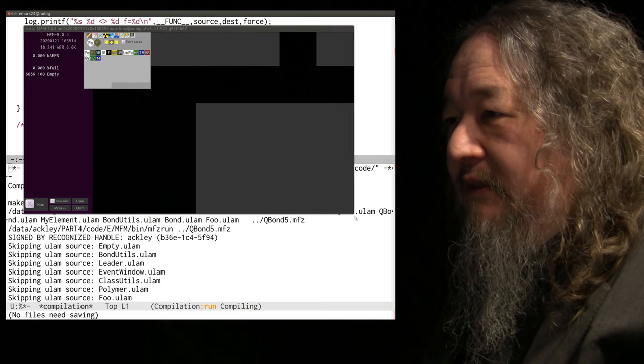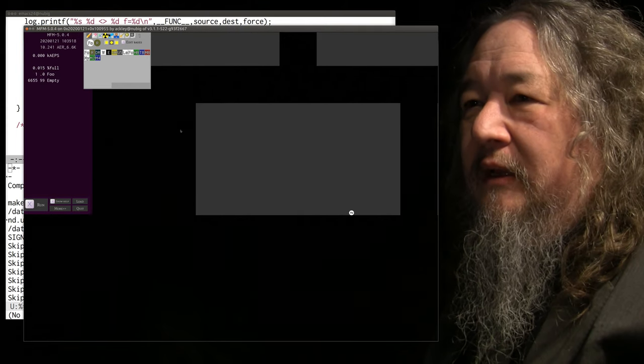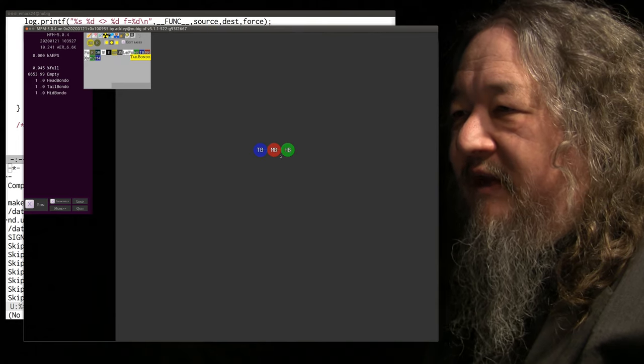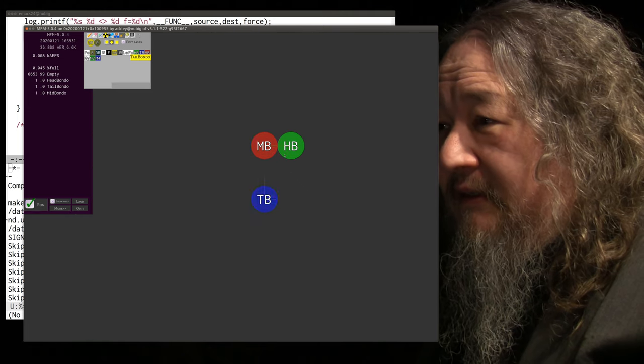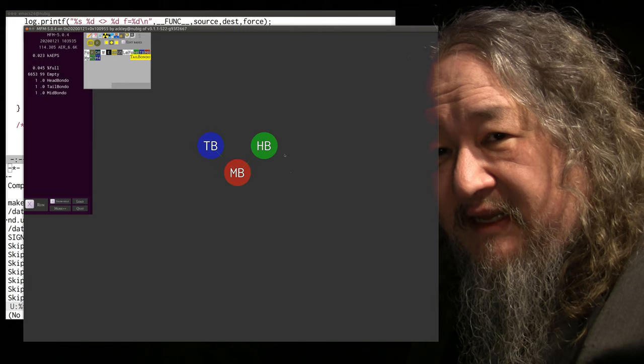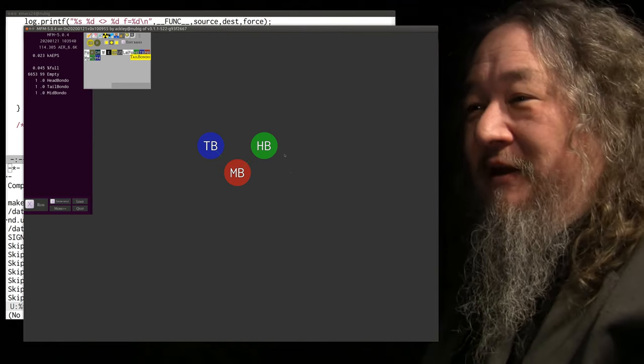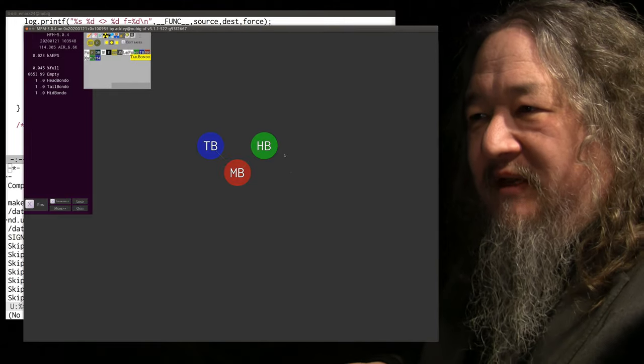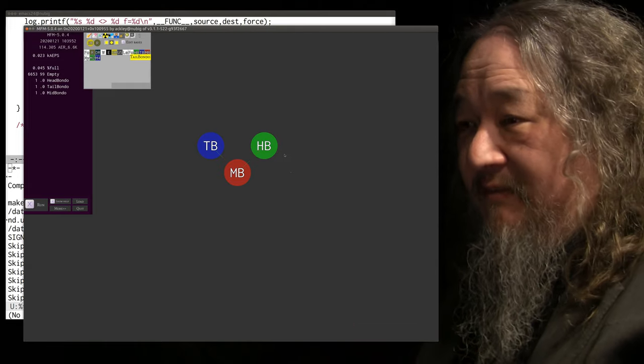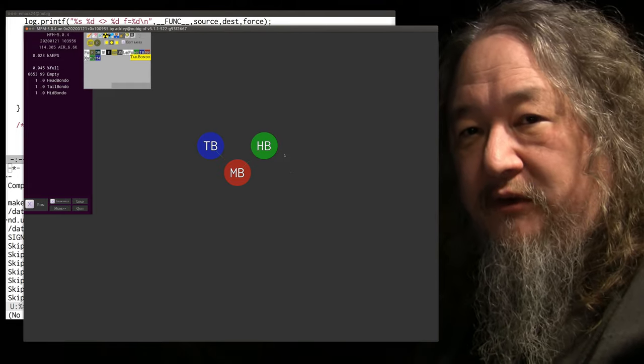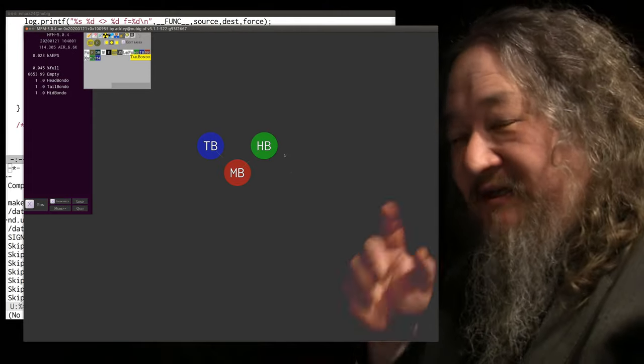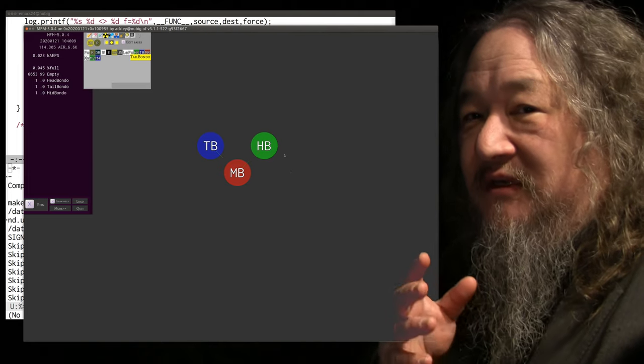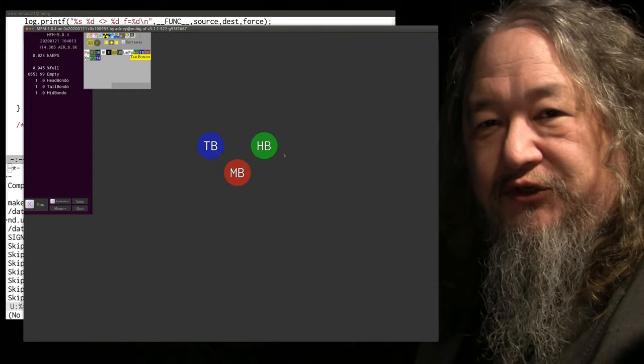So, let's get rid of this. All right, so we'll put down a seed, we give it a seed, and we give the seed an event, it springs out into a head, tail, and check it out. The bonds are getting drawn. How could that be?